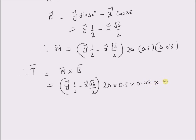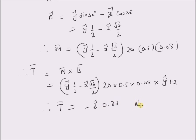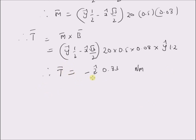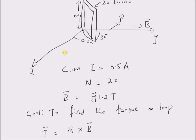Cross product with y-cap 1.2 tesla. Therefore, T-bar equals minus z-cap, because y-cap cross y-cap is always zero since they are parallel vectors, and x-cap cross y-cap gives z-cap, with a negative sign since the x-component is in the negative x direction. So we have minus z-cap times the rest of the numbers, which equals 0.83 newton-meters. Therefore, the final torque is in the negative z direction.